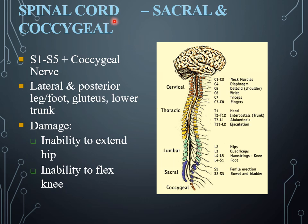The sacral and coccygeal nerves: sacral nerves are five in number from S1 to S5, and they are present in the lateral and posterior leg, foot, and lower trunk. Damage to these nerves can result in the inability to extend the hip and inability to flex the knee.